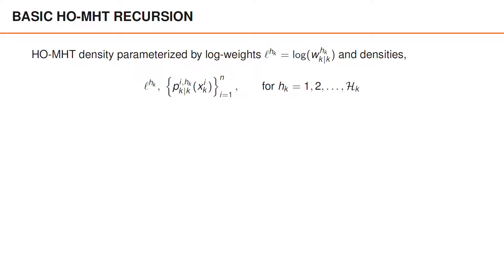In hypothesis-oriented MHT, the density is parameterized by log weights and object densities for each hypothesis h. The log weight is the log of the probability of the hypothesis, and the reason we have log weights instead of weights has to do with numerical aspects. In implementations, it is not uncommon to have to deal with very small numbers. When the algorithm is running, the true result of a floating point operation could end up being closer to zero than the smallest value that can be represented as a normal floating point number. By having log weights, this can often be avoided.